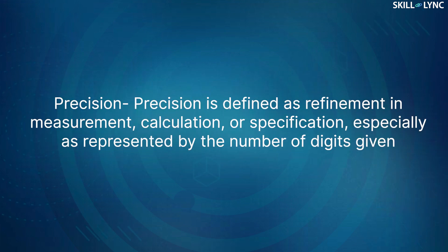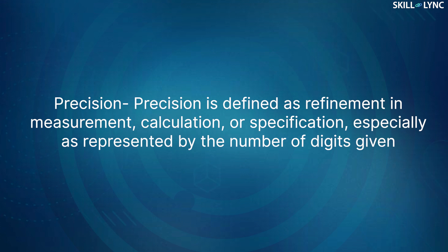People often end up confusing both of them. So in this video, we decided to simplify it for you. Let me tell you the textbook definition of these two terms. Precision is defined as refinement in measurement, calculation or specification, especially as represented by the number of digits given.